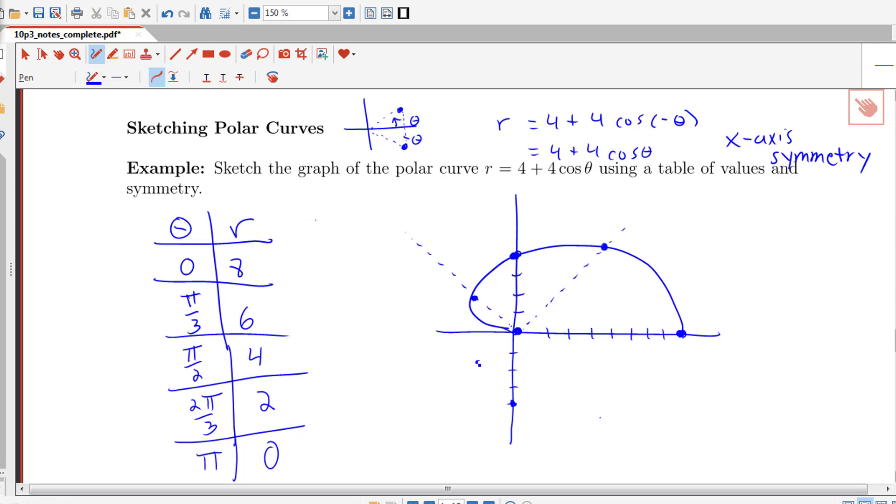We also have some symmetry going on. So I have a point here, here, and around here as well. We can finish completing our curve and see that we have this nice heart shape here. This is called a cardioid. We'll continue looking at polar curves and calculus with polar curves in our upcoming classes. Let me know if you have any questions.